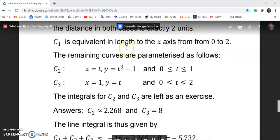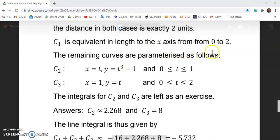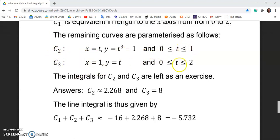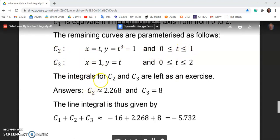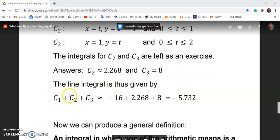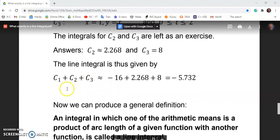So it's not surprising that we get minus 16 because only the sign has changed, and this integral is equal to this integral that you see on the right. And the only thing that has happened is the direction of integration. In both cases, it's exactly two units. So c1 is equivalent in length to the x axis from 0 to 2. The remaining curves are parameterized as you see here, c2 and c3, with the intervals as shown. And I'll leave the integrals for c2 and c3 as an exercise, but the answers you should get are c2 is approximately equal to 2.268 and c3 is equal to 8. So the line integral is usually given by the sum of all the curves, and it turns out to be minus 5.732.